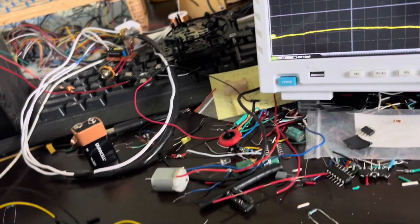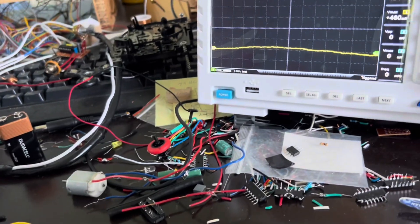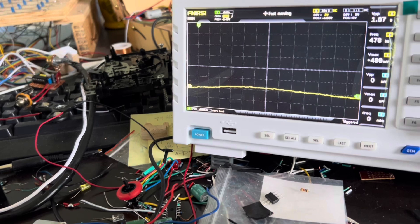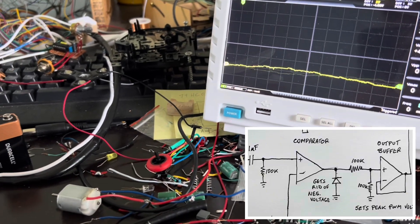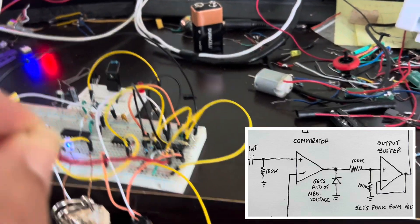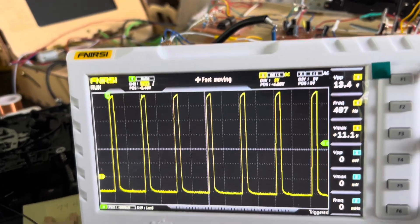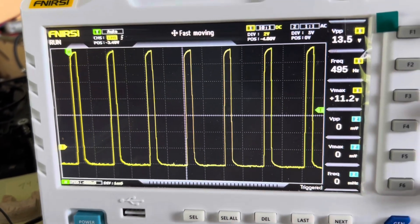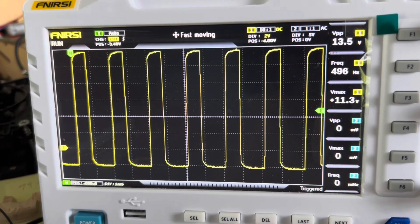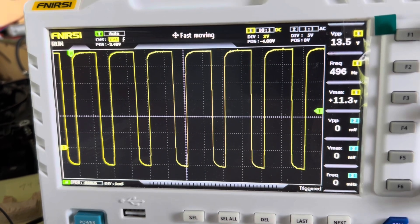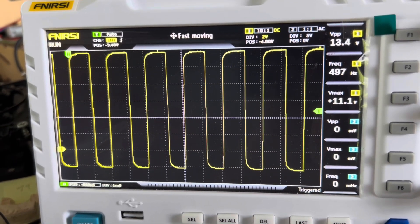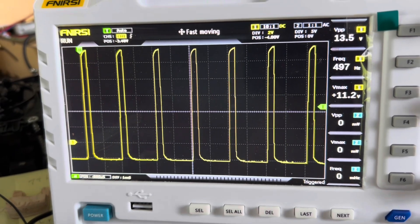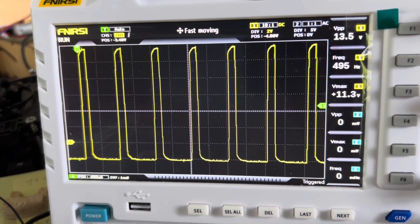Then I'm going to probe the comparator, the output of the comparator. And so that is going to be right there. And that's what you get with the comparator. And you see it's automated with that oscillator.